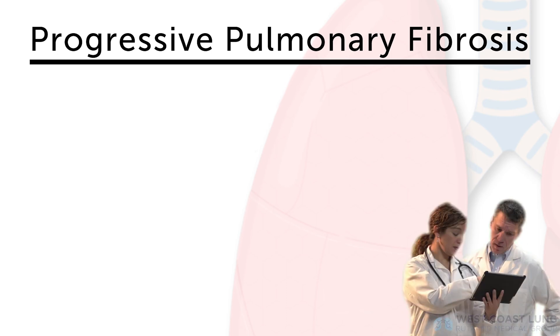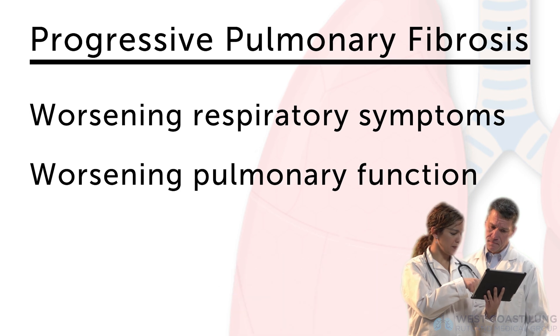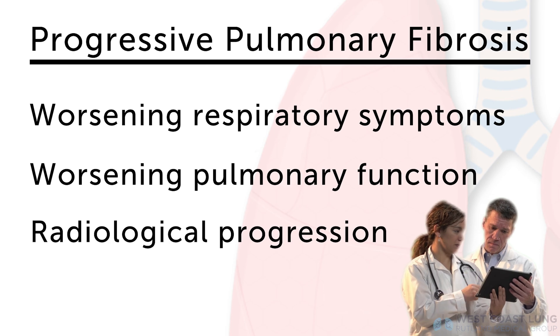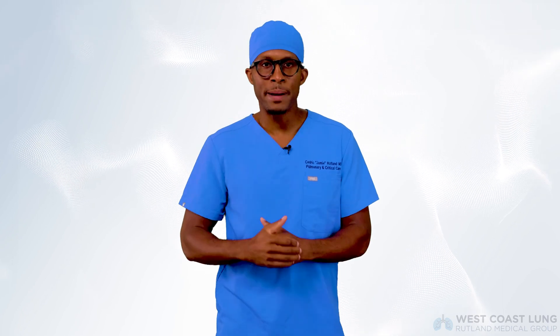A new concept is progressive pulmonary fibrosis, or PPF. It's defined by two out of three criteria: worsening respiratory symptoms, worsening pulmonary function, and radiological progression on CT — meaning more whiteness, scarring, or inflammation. A certain number of individuals with any ILD, including autoimmune connective tissue diseases, can develop PPF. The treatment for PPF is nintedanib, or OFEV. We follow pulmonary function with spirometry — if FVC declines by 10% or FEV1 declines by 10%, along with worsening symptoms or CT progression, that qualifies as PPF and warrants these newer therapies.